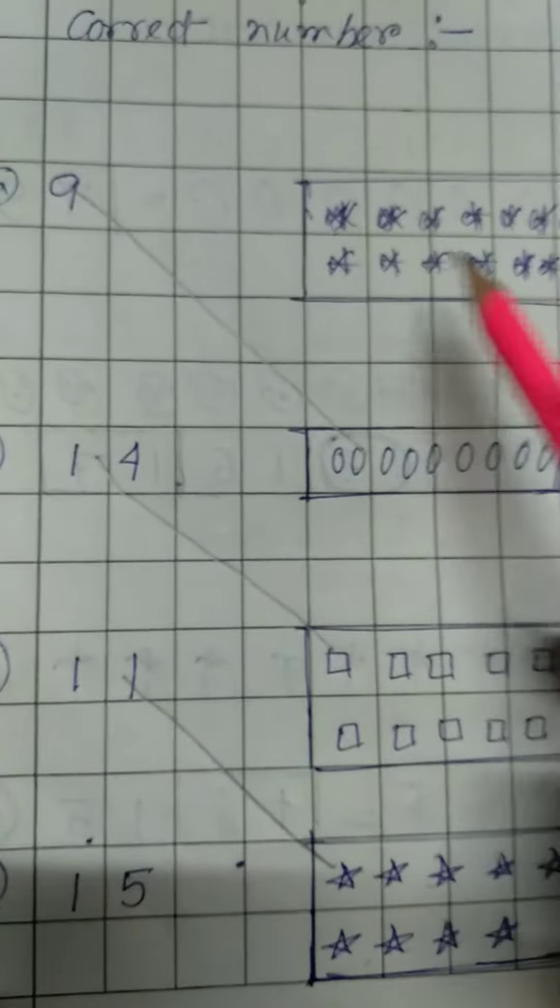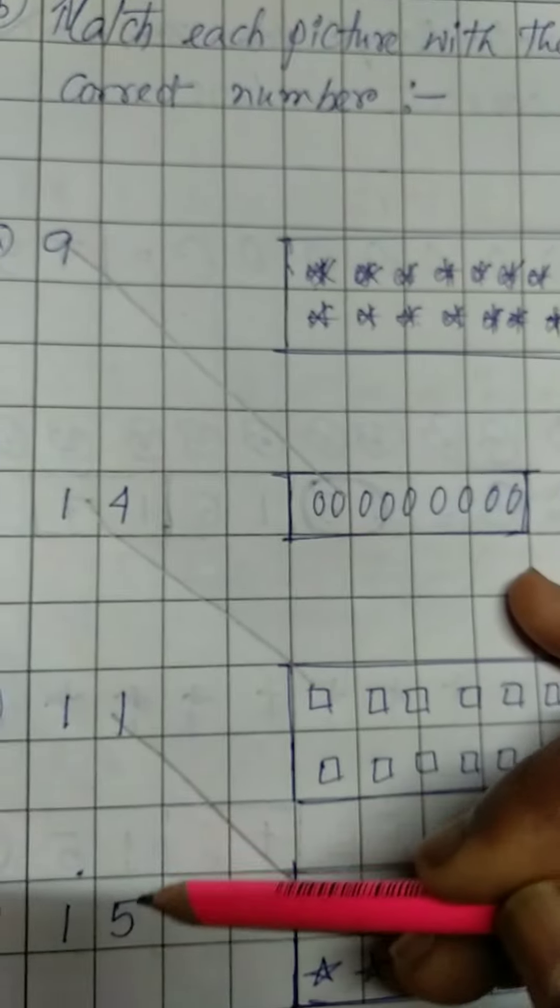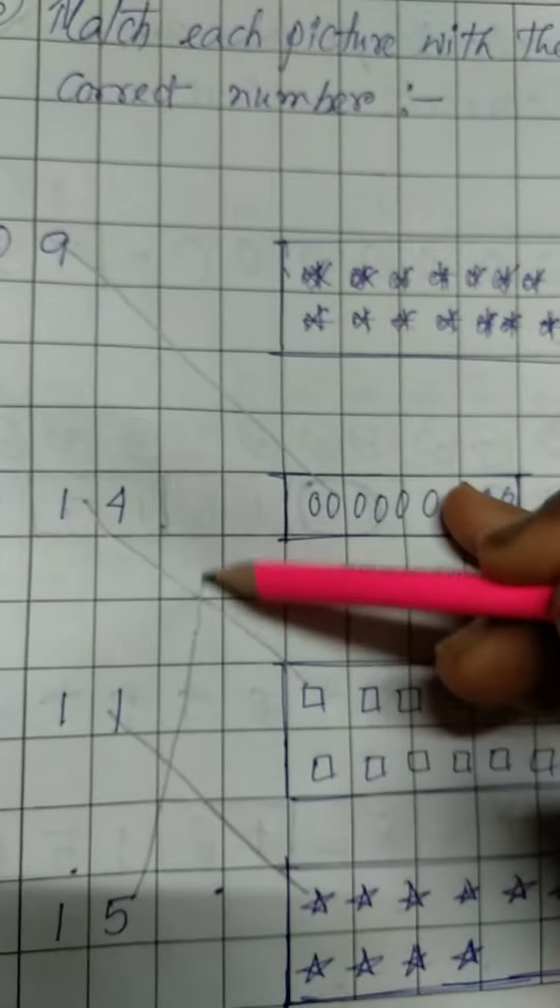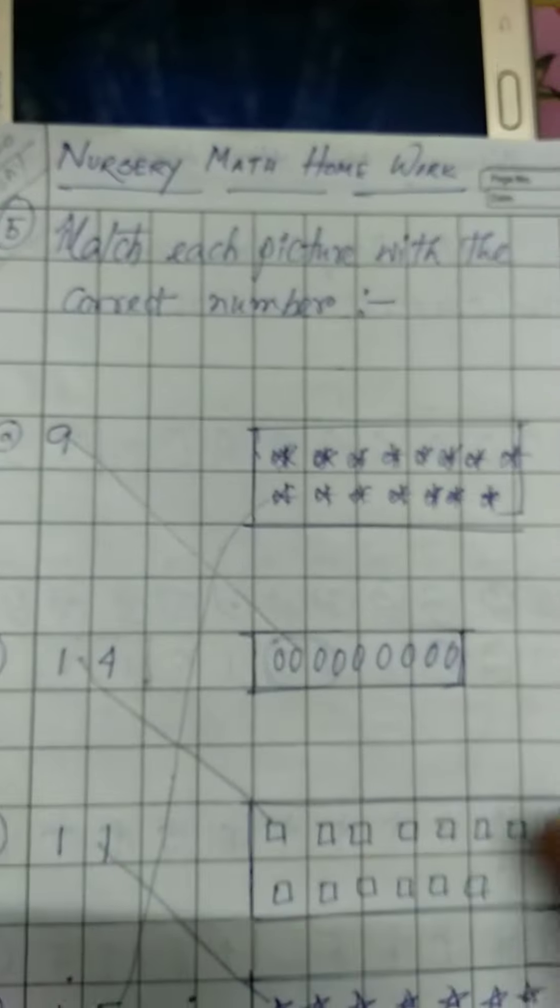Okay, now last one is 15. 1, 2, 3, 4, 5, 6, 7, 8, 9, 10, 11, 12, 13, 14, 15. Here is 15, so last one is 15. You have to match like this. This is very easy and interesting too. Okay, you have to do in your homework copies, thank you.